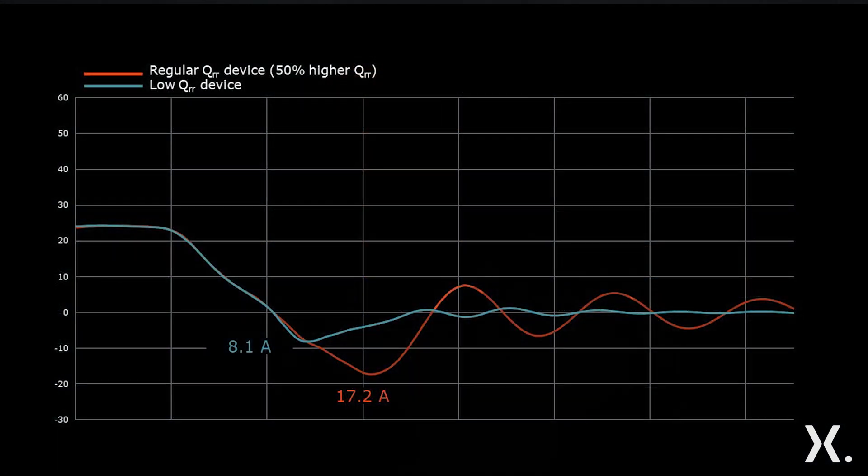We have a low QRR product waveform shown in petrol blue. The orange waveform is a simulation representing if we doubled the QRR value. What we can see is that the IRR can be reduced by up to 50 percent for a low QRR type versus a device with double the QRR value.